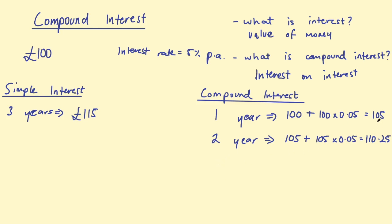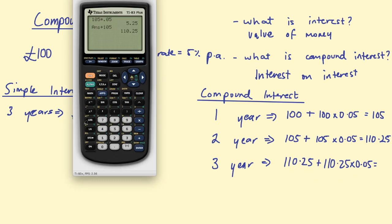You can see it's going up a little bit more than simple interest. After three years, we're going to have 110.25 plus 5% of that — so 110.25 times 0.05, then add that on. Pull your calculator out, multiply that by 0.05, finding 5%, and adding that on to our initial amount of 110.25.